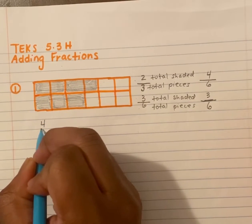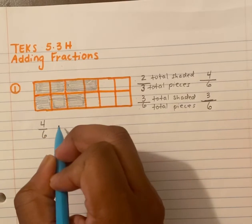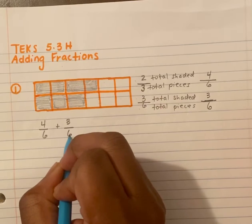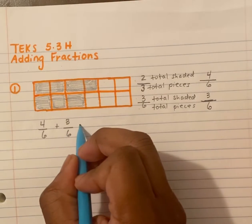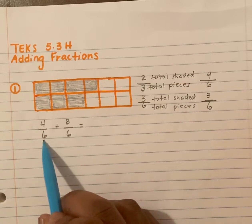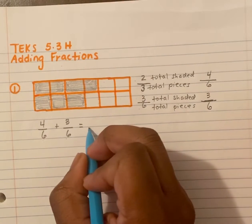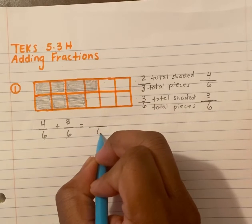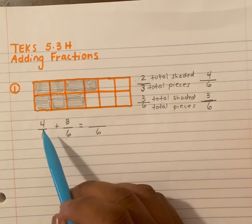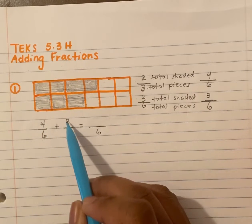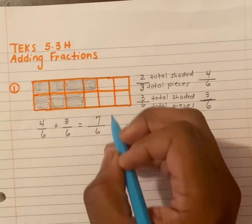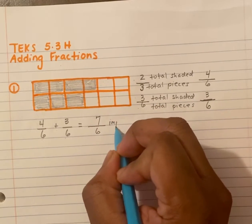So now we have our number sentence: it is four over six plus three over six. Remember, we do not add the denominators — only the numerators. So six will remain as our denominator. What's our numerator? Four plus three equals seven.